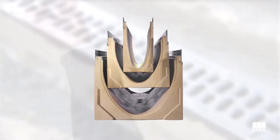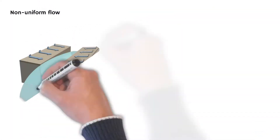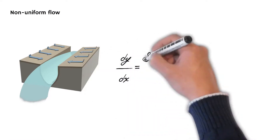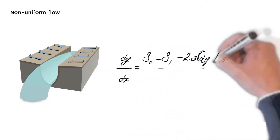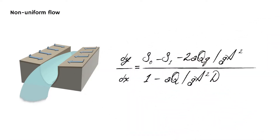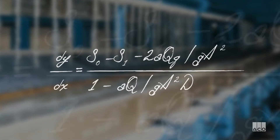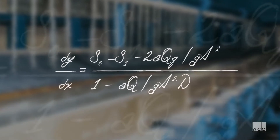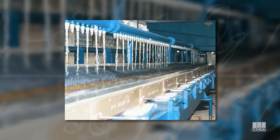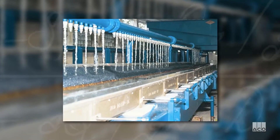Akko uses a proprietary program modelled on the equation for steady non-uniform flow, which accounts for liquid carried along the channel length with the constant addition of more liquid spilling laterally into it from the catchment runoff. The equation has been calibrated by full-scale independent tests to ensure that the program is able to model real-life scenarios.